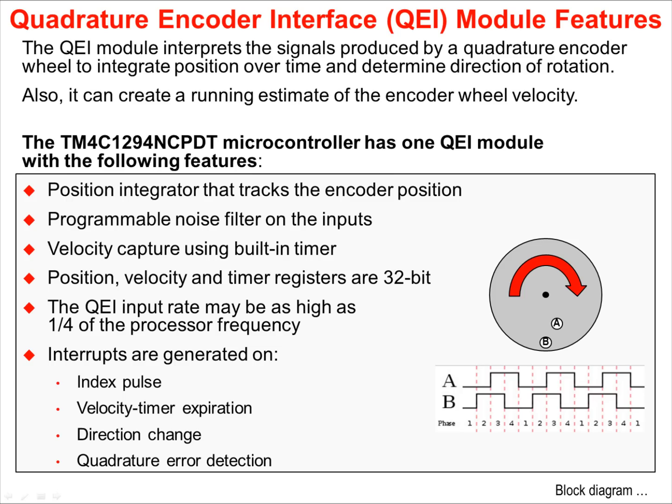The QEI module interprets the signals created by a quadrature encoder wheel to integrate position over time and determine the velocity of rotation. It also creates a running estimate of the encoder wheel's velocity. The microcontroller has a single QEI module with a position integrator that tracks the encoder position and has programmable noise filters on its inputs. Velocity capture is accomplished using a built-in timer in the module.